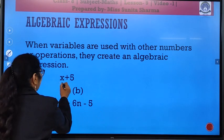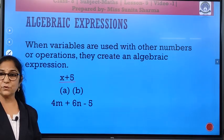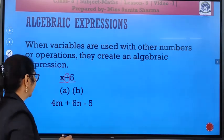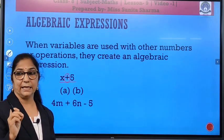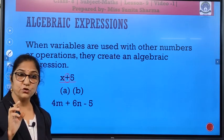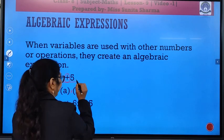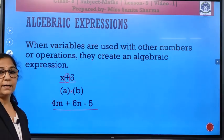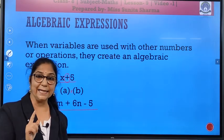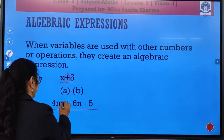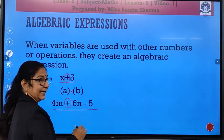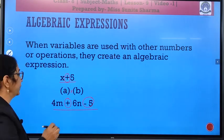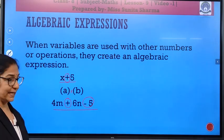So, here you see in this, this is an expression x plus y. Here the operation used is plus. Then here you see, children, it is a and b, but it is a into b. So, the operation used is multiplication. Same way in this expression you see, here there are two operations used together. Addition and subtraction. So, here it is plus 6n and then minus 5. So, these all are mathematical expressions.